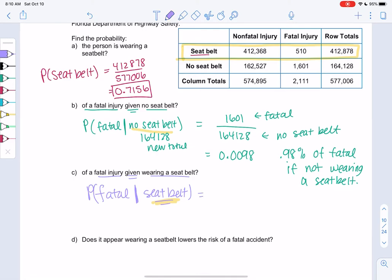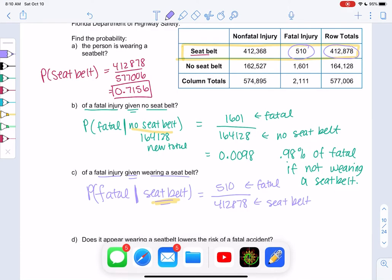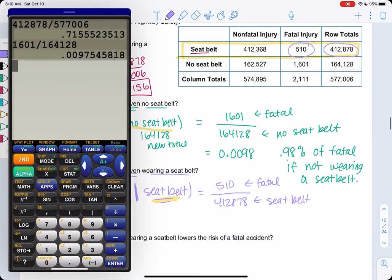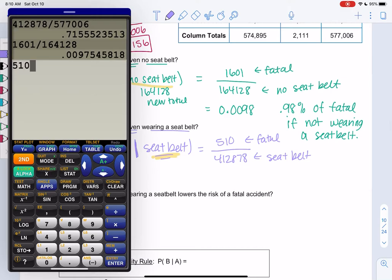Everyone wearing a seatbelt is 412,878, we'll put that on the bottom, and then 510 of those were fatal. So 510 fatal out of 412,878 is everyone with a seatbelt.